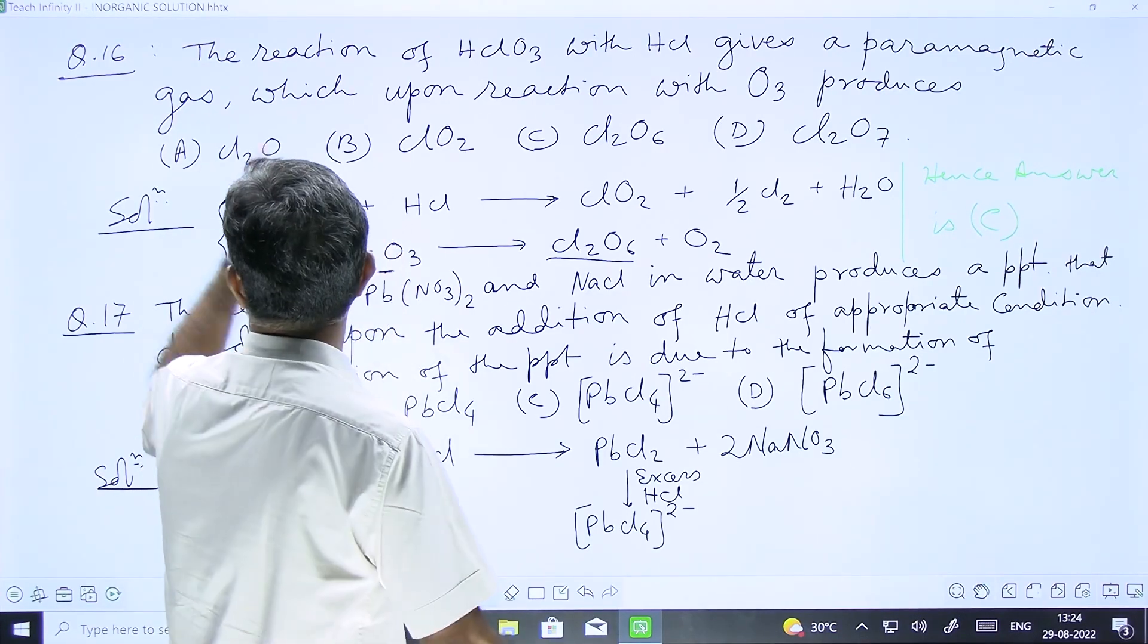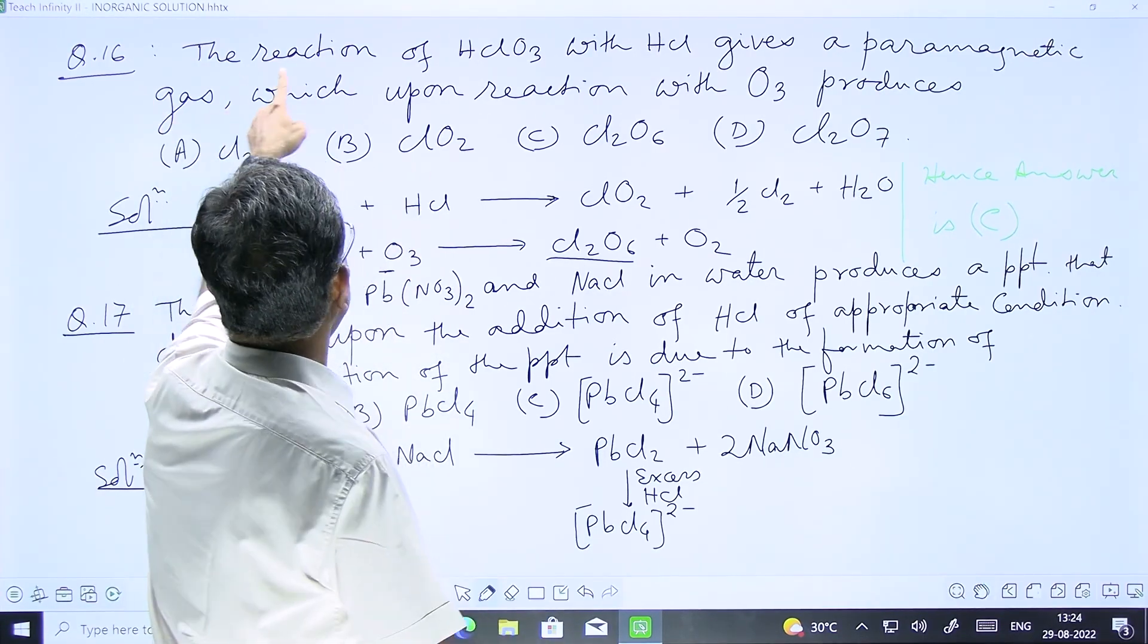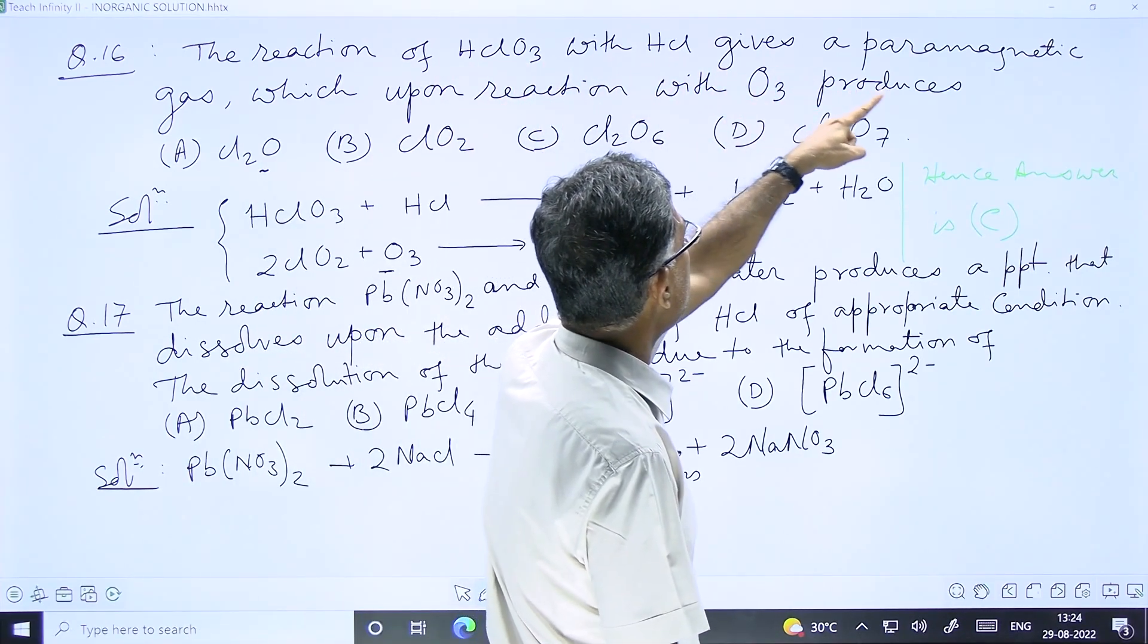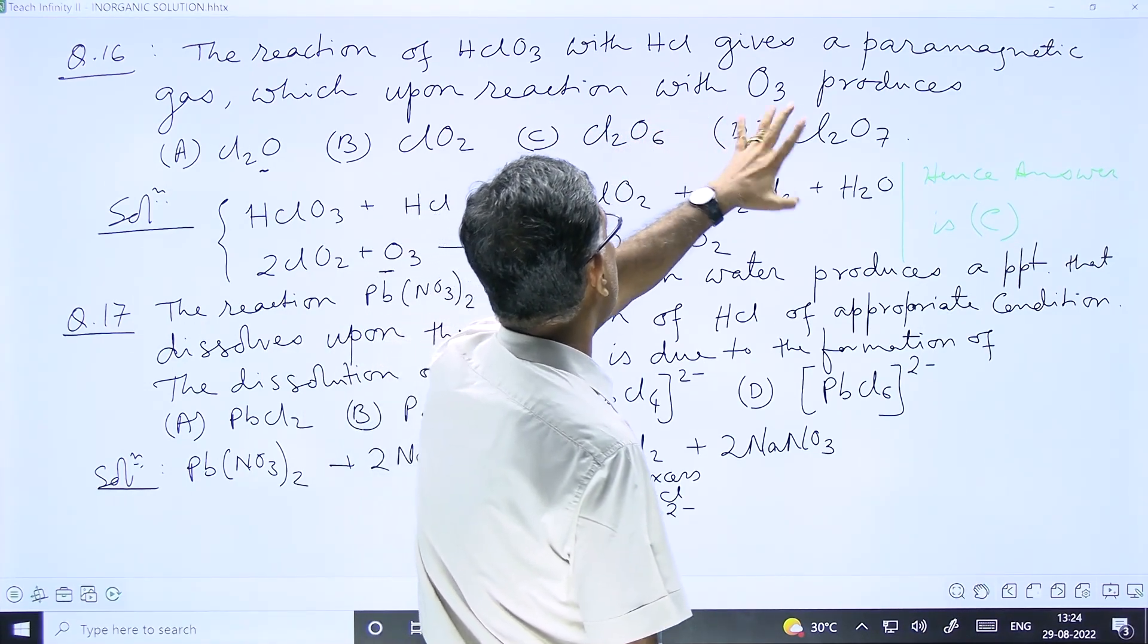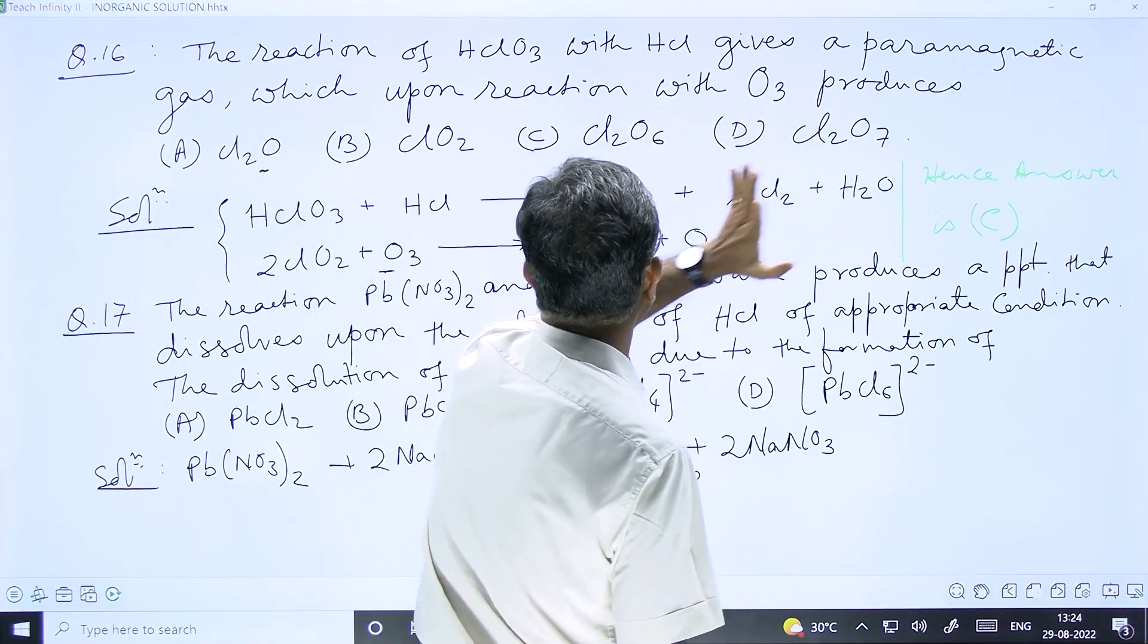Question number 16. In this case, the reaction of HClO3 with HCl gives a paramagnetic gas which upon reaction with O3 produces which of the following compounds.